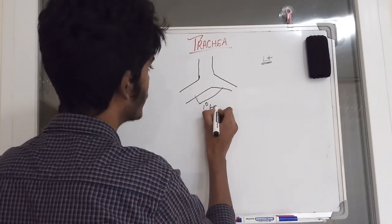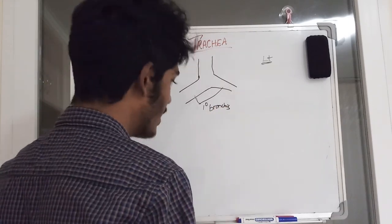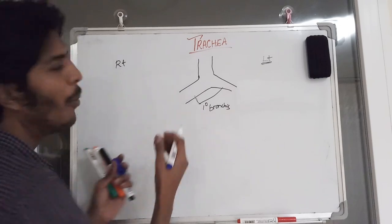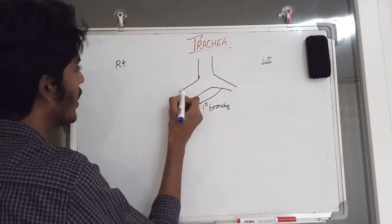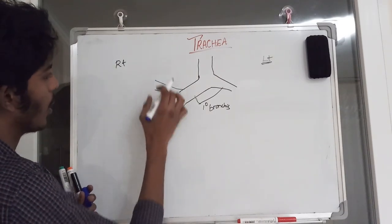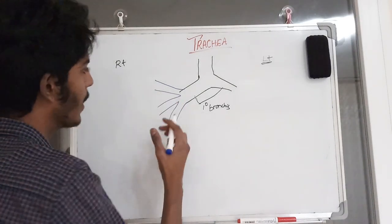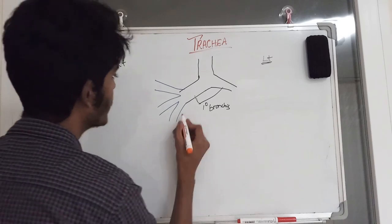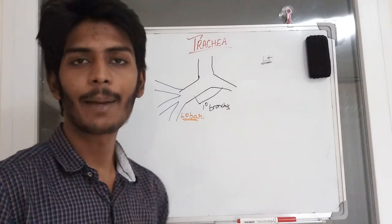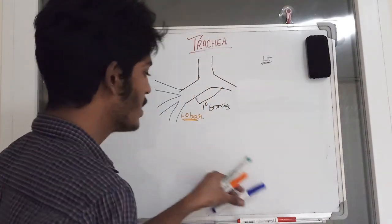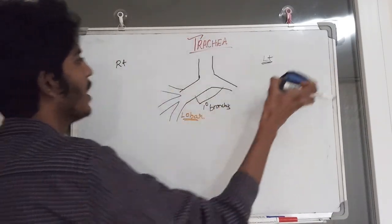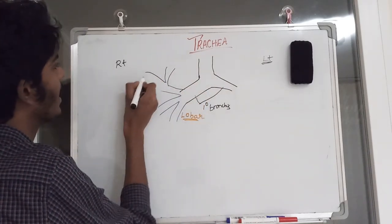The primary bronchi further divide according to the number of lobes in each lung. The right lung has three lobes, so the right primary bronchus divides into three lobar (secondary) bronchi — upper, middle, and lower. Each lobe further divides into segmental bronchi. The right upper lobe has five segments, giving rise to five segmental bronchi.